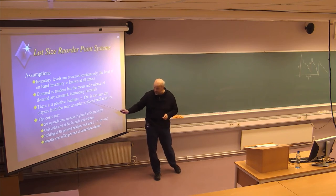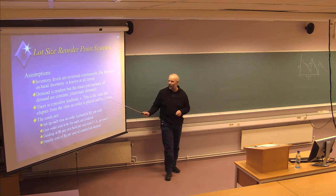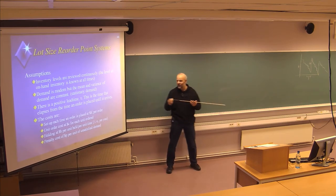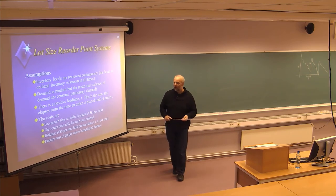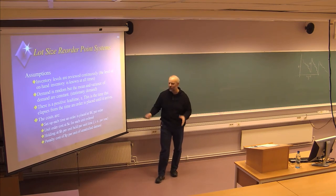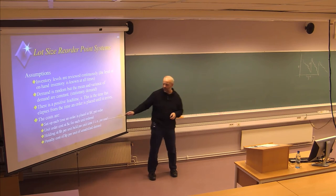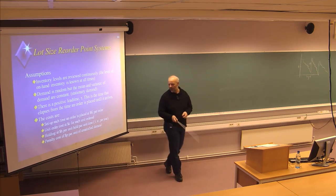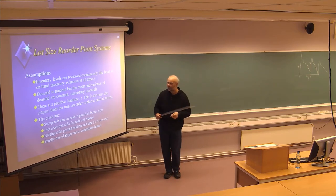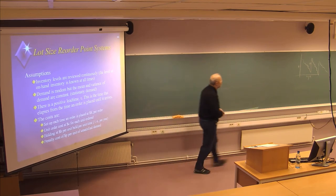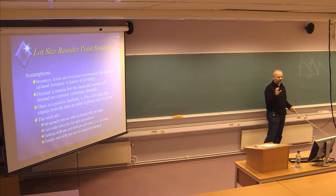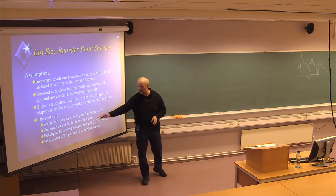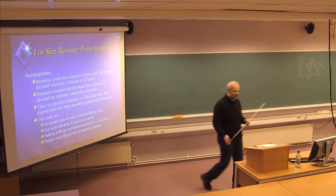We have a positive lead time, denoted by the Greek letter tau — the time from when the order is placed until it arrives. The costs are: a setup or one-time ordering cost each time an order is placed; a unit order cost per item; a holding cost H, which can be the cost per item multiplied by the interest rate; and a penalty cost when you have an unsatisfied demand, i.e., a stockout. In addition to ordering and holding costs, we must include the penalty cost to find the optimal strategy.